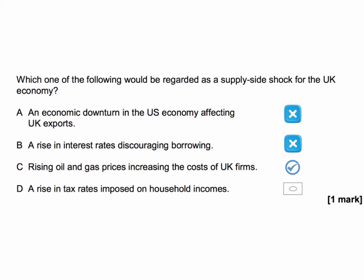Let's just double check with D: a rise in tax rates imposed on household incomes. That's not affecting the supply side of the economy — it's affecting the disposable income of households, and therefore an unexpected rise in tax would be a demand side shock. So three of the four answers are affecting aggregate demand; C is right because it affects aggregate supply.